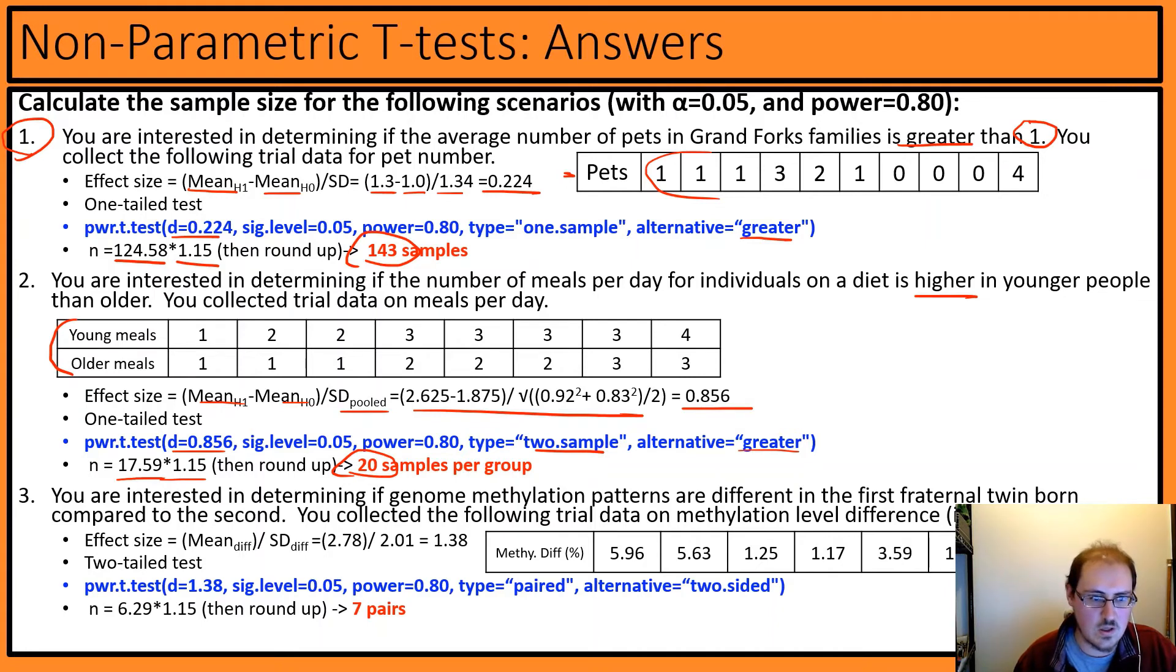Now let's take a look at three. So three is, again, very similar to what we saw for the paired. And so we'll do paired. Looks like we have difference value, so we can get mean difference and then standard deviation of that difference to get our effect size of 1.38. It's a two-tailed test because we're asking about difference, which gives us parametrically 6.29. Well, for non-parametric, we need seven pairs.